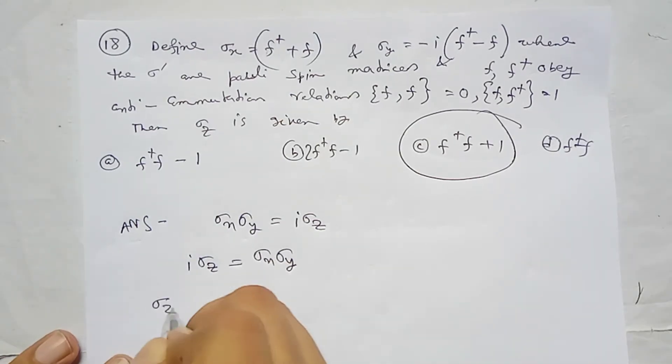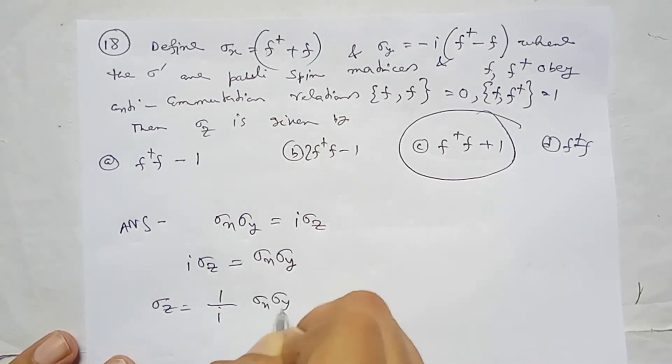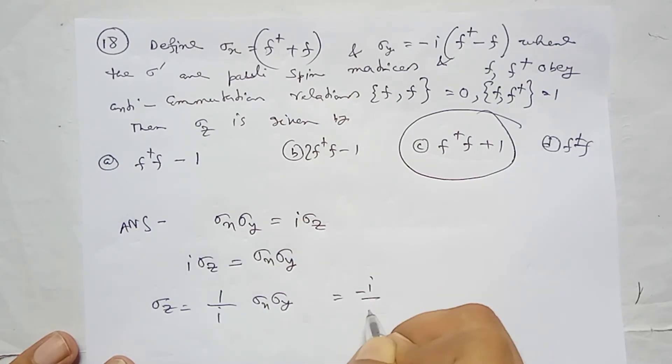Now sigma z equals 1 over i times sigma x sigma y, which is minus i over i times f dagger plus f.